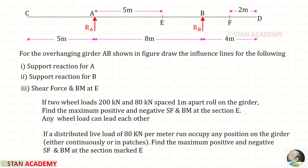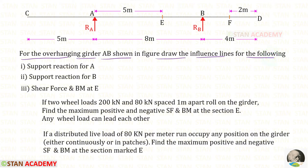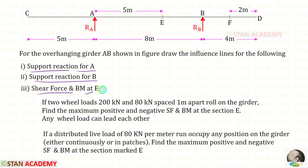Hello everyone. Today we are going to see a problem based on influence line diagrams. Let us read the question one time. For the overhanging girder AB shown in the figure, draw the influence lines for the following: support reaction for A, support reaction for B, shear force and bending moment at E.